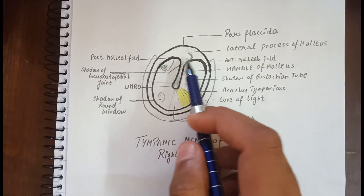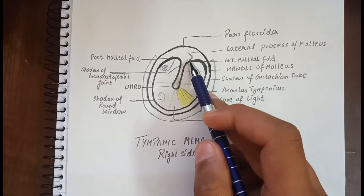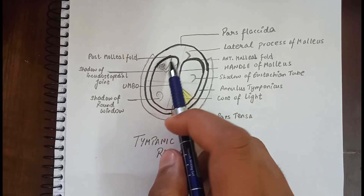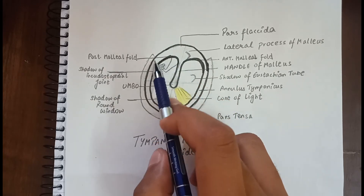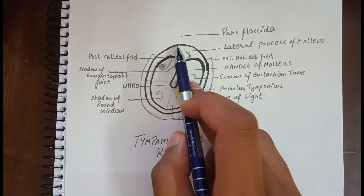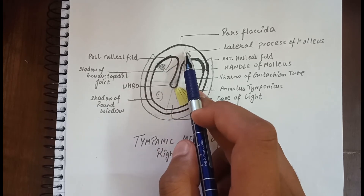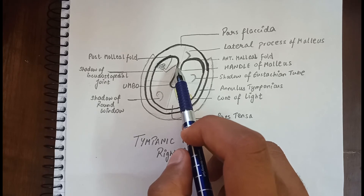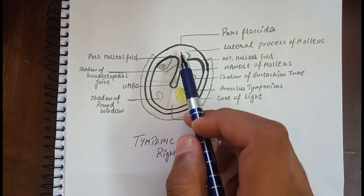In the pars flaccida, very few structures can be seen — notably the lateral process of the malleus. Pars flaccida is present between the anterior and posterior malleolar folds and the notch of Rivinus. The bony sulcus moves upward and forms a notch to which the pars flaccida is attached. Thus, it is present between the notch of Rivinus and the anterior and posterior malleolar folds.